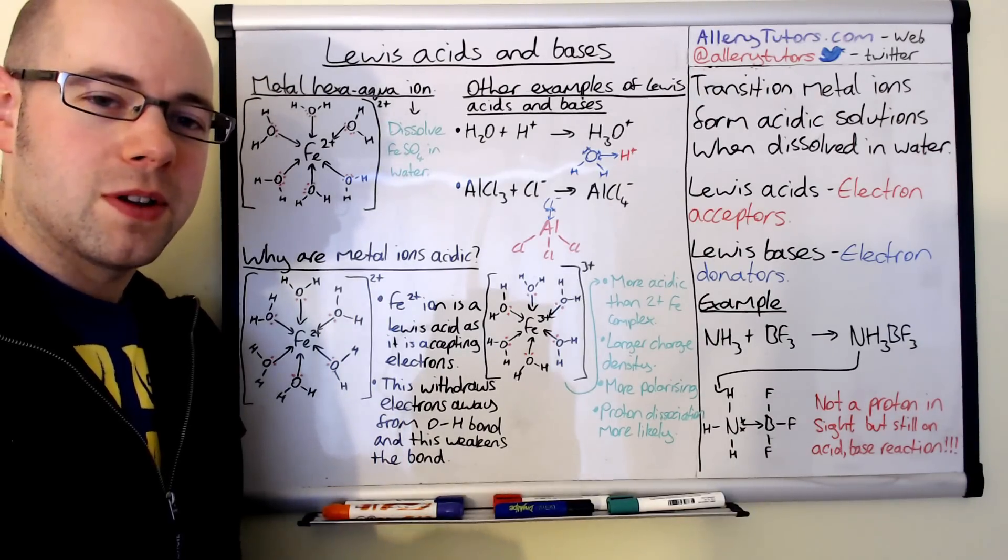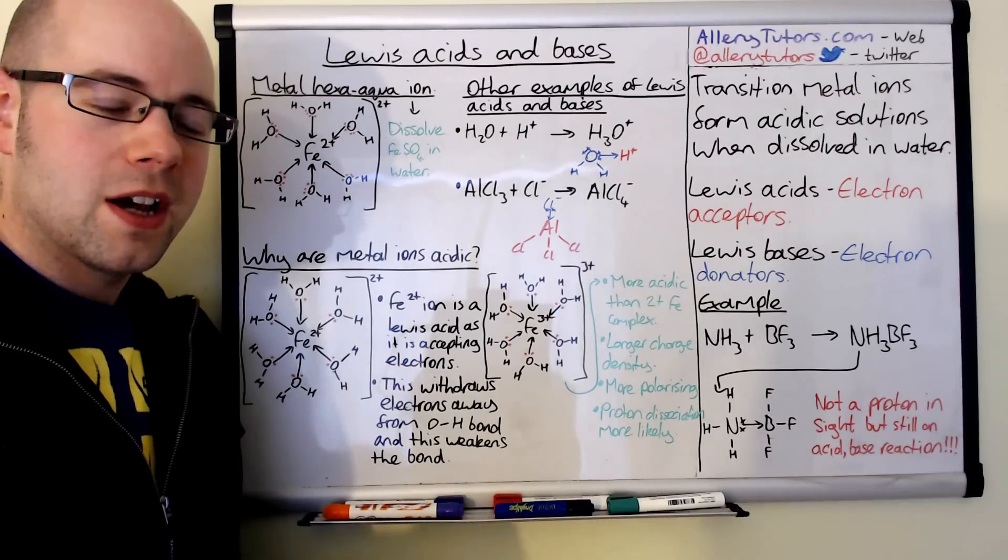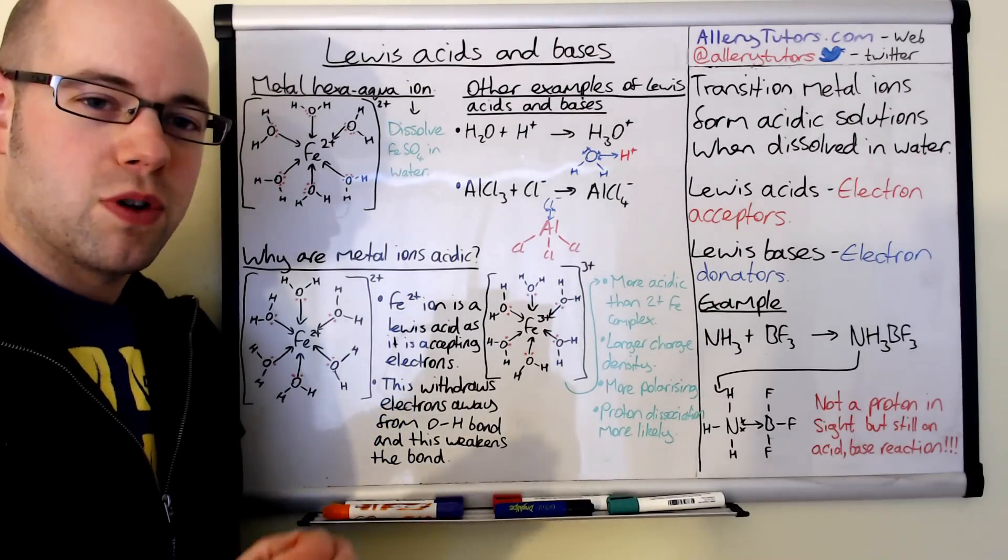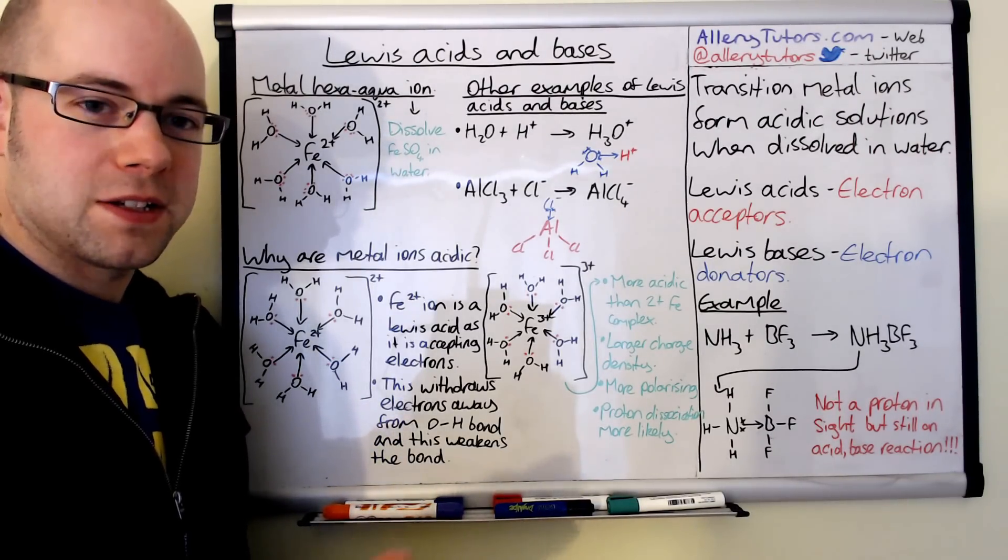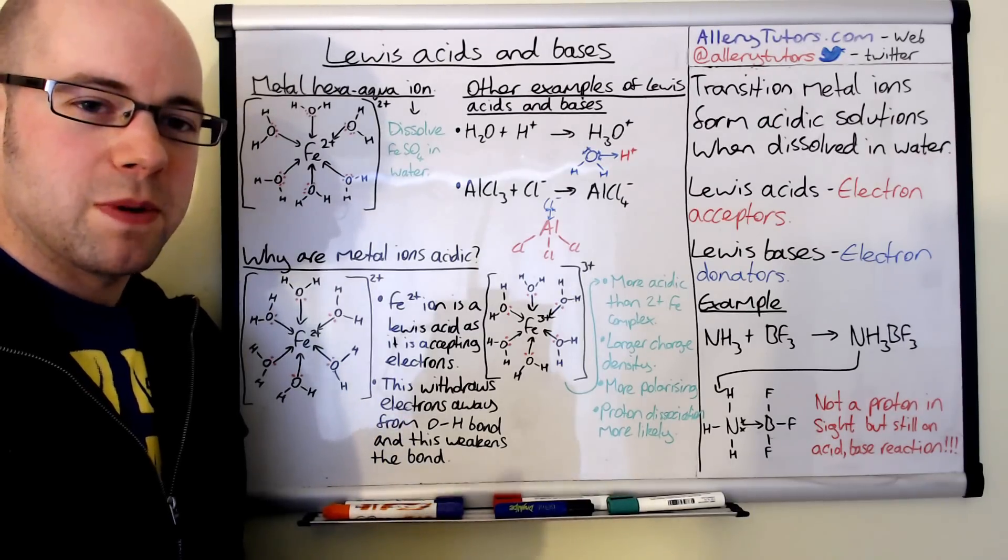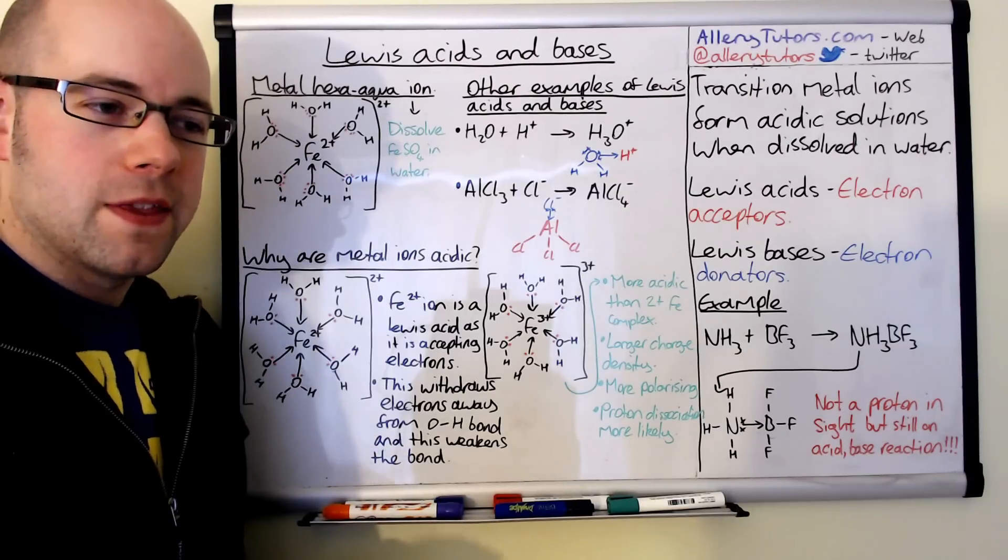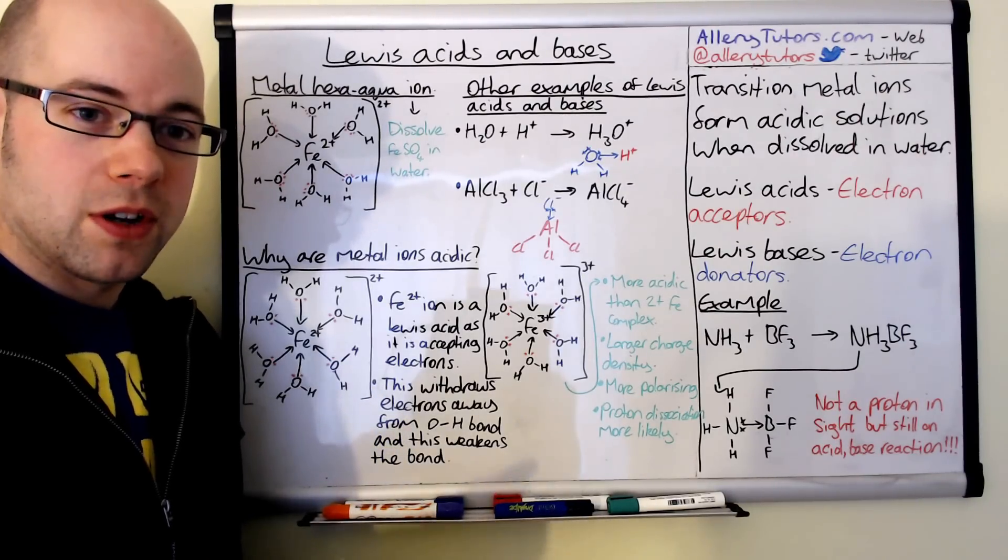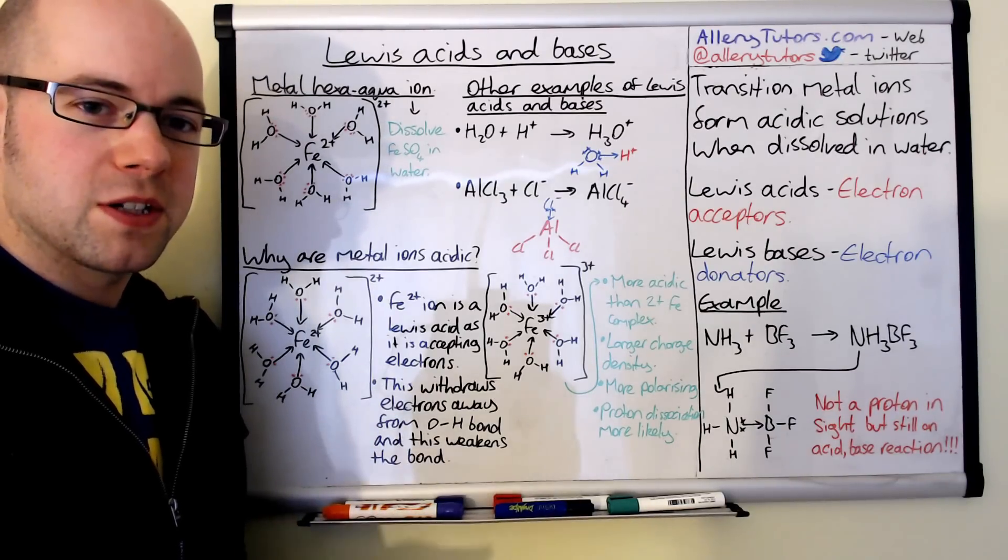We're going to start with what we mean by an acid and a base. You might already know that acids and bases are generally defined as proton donors and proton acceptors. An acid would be a proton donor and a base would be a proton acceptor. This is true for what we call Bronsted-Lowry theory, the proton theory where acids give up protons and bases accept them.